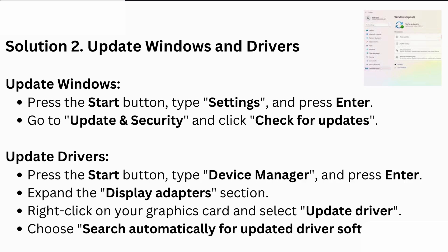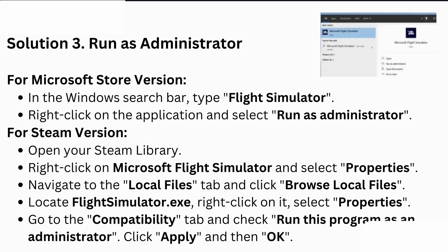Next, update Windows and your drivers. To update Windows, press the Start button, type 'Settings', and press Enter. Go to Updates and Security and click 'Check for Updates'. To update your drivers, press Start, type 'Device Manager', and press Enter. Expand the Display Adapters section, right-click on your graphics card, and select 'Update Driver'. Choose 'Search automatically for updated driver software'.